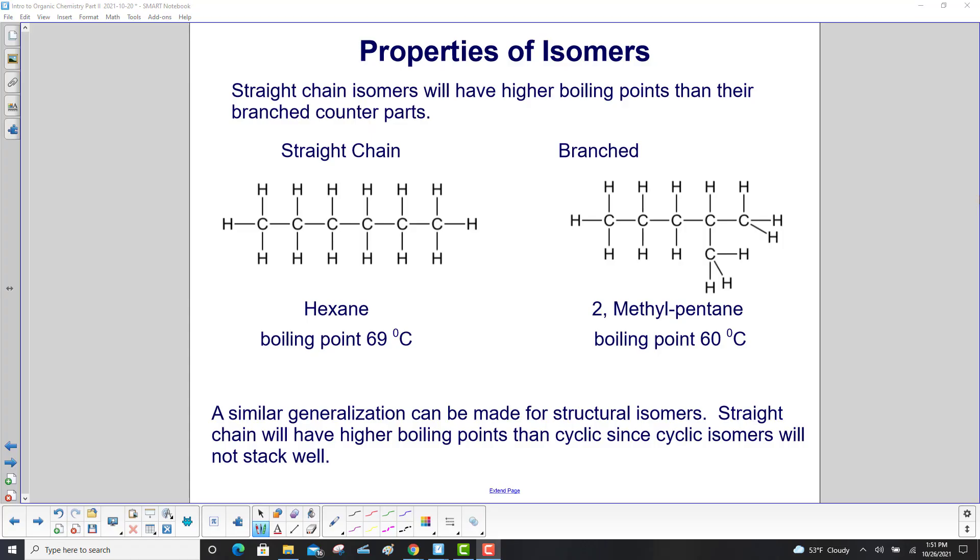Straight chain isomers will have higher boiling points than their branched counterparts. Here's hexane, 69 degrees Celsius, and here's menthol pentane, 60 degrees Celsius. A similar generalization can be made for structural isomers. Straight chain will have higher boiling points than cyclic since cyclic isomers will not stack well.